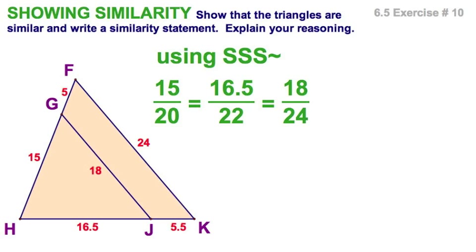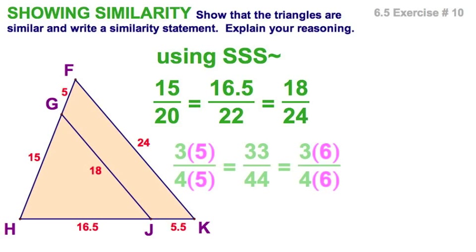Now we could just divide with a calculator, 15 divided by 20 - all these, we'll get .75. You already know that. But if you want to be faster than that, just go with similar fractions. Because I can see that this is, divide out the fives, divide out the sixes, 3 fourths, 3 fourths. I just double the numerator and denominator here. I've got 33 over 44. Divide out the 11s, each of them 3 fourths. So they're similar by side, side, side similarity.